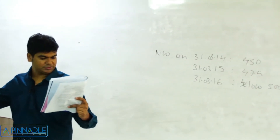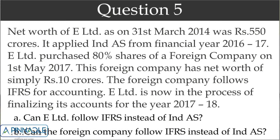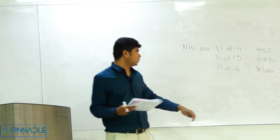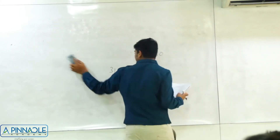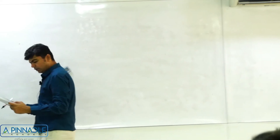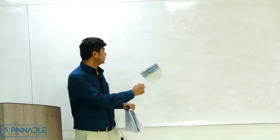For question 5: net worth of E Limited on 31st March 2014 is 550 crores, and it applied Ind AS from financial year 2016-17. E Limited purchased 80% shares of a foreign company on 1st May 2017. The foreign company has a net worth of 10 crores and follows IFRS. E Limited is finalizing accounts for 2017-18. Can E Limited follow IFRS instead of Ind AS, and can the foreign company follow IFRS instead of Ind AS?